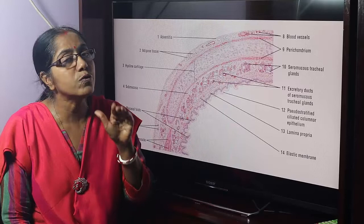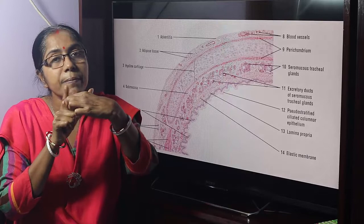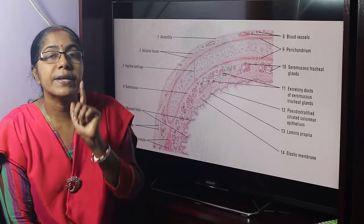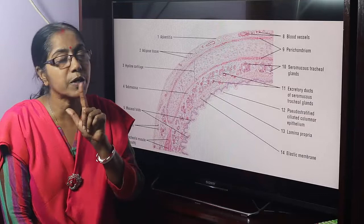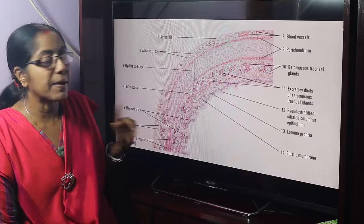The 16 to 20 C-shaped hyaline cartilage rings are incomplete. The posterior wall is completed by the tracheal muscle. This is the tracheal muscle — it is the smooth muscle. There are three types of muscle tissue: skeletal muscle, cardiac muscle, and smooth muscle. The tracheal muscle is smooth muscle.